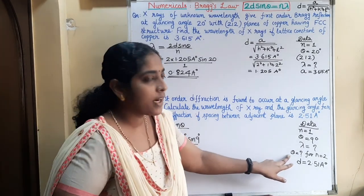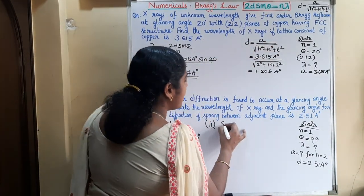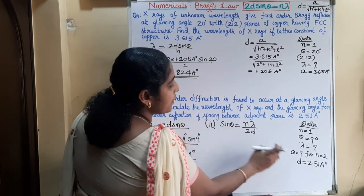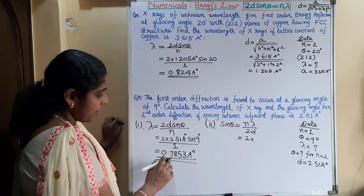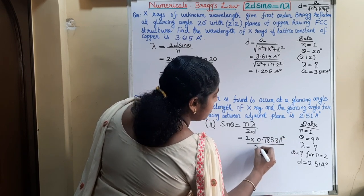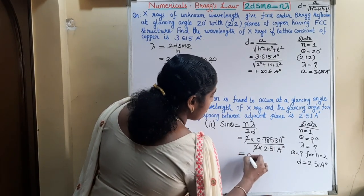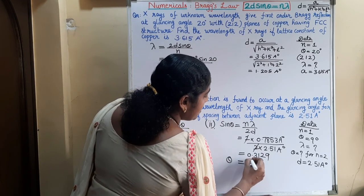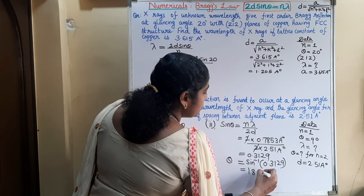For the second part, we find the glancing angle for second order diffraction. From Bragg's law, sin theta equals N lambda divided by 2D. For N equals 2: sin theta equals 2 into 0.7853 Angstroms divided by 2 into 2.51 Angstroms, giving 0.3129. Therefore theta equals sine inverse of 0.3129, which is 18.23 degrees.